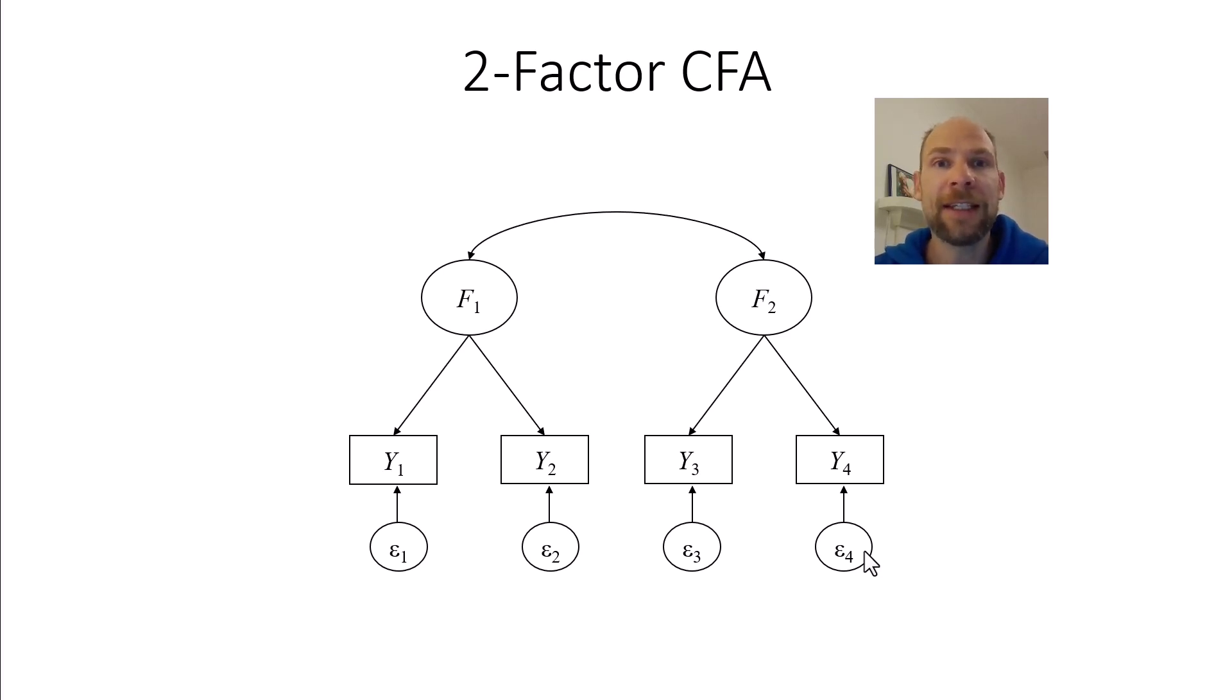So a model like this is identified, it could be estimated, but it's only identifiable under certain conditions. And so in this model, when you have only two indicators per factor and you estimate the factor loading freely for one of the indicators per factor, so meaning when you have a congeneric model with different loadings between the indicators where you estimate the loadings,